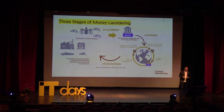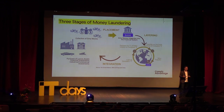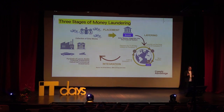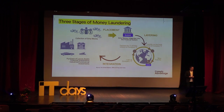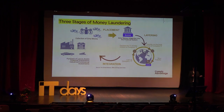What a money launderer would do is engage in laundering the money. There are three typical stages: placement, layering, and integration. Placement is the first stage — where dirty money is introduced into the financial system, perhaps depositing cash or introducing dirty funds into an account. It's a risky stage because there's a very strong attachment to the proceeds of crime, making it very traceable, so you want to move it out quickly.